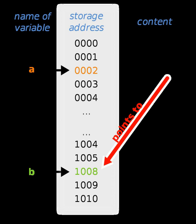In computer science, a pointer is a programming language object that stores the memory address of another value located in computer memory. A pointer references a location in memory, and obtaining the value stored at that location is known as dereferencing the pointer.